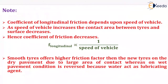The coefficient of longitudinal friction depends upon the speed of the vehicle. If the speed of the vehicle is very high, then the contact area between the tyre and the pavement is very less, so friction will be very less because frictional force depends on contact area. If the speed is very large, the contact area reduces to a very small value, so frictional force also reduces. But if the speed is very slow, the contact area will be very high.